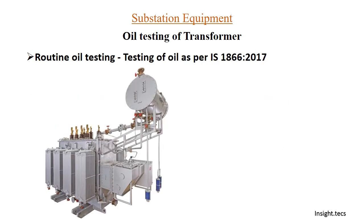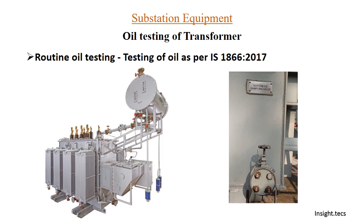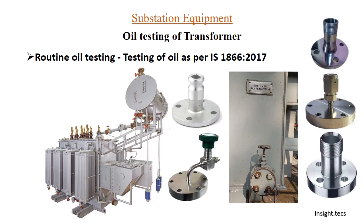Now let us understand how oil samples are taken from the transformer for routine oil testing. There is a bottom oil sampling valve present in the transformer — this kind of valve you can see in all transformers. Oil samples are generally taken from the bottom oil sampling valve. From this valve we connect a flange, and through a pipe we can take the sample. Various kinds of flanges are available in the market; whichever flange fits with this sampling valve, you can use that.